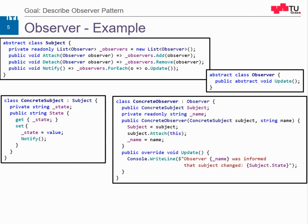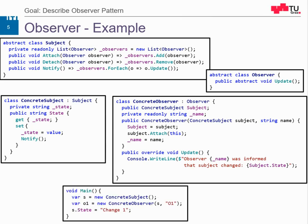Here we have our concrete observer, which attaches to the subject in its constructor. On update, it simply writes the update to the console. Our main method looks like this: we have the concrete subject, we have the concrete observer, and by passing the subject into the observer's constructor, we attach to it. Then whenever we change the state — for example, setting s.state equal to "change1" — the observer prints this to the console.